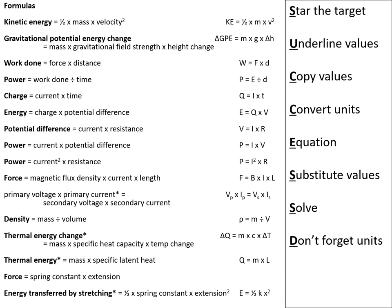Quick reminder of all formulas that could appear in the exam: KE = ½mv²; ΔGPE = mgΔh; work done = Fd; power = W/t; Q = It; E = QV; V = IR; P = IV; P = I²R; F = BIL; primary V × primary I = secondary V × secondary I; density = m/V; ΔQ = mcΔT; Q = mL; F = kx; energy stored in spring = ½kx². Note: starred equations will be provided on the formula sheet and do not need memorising.